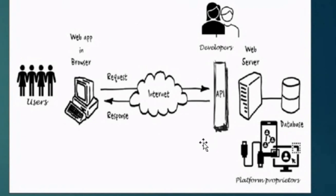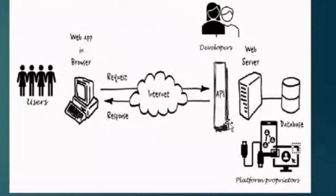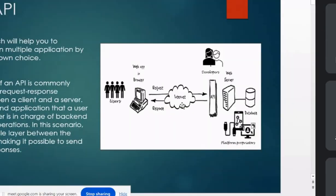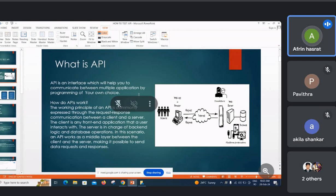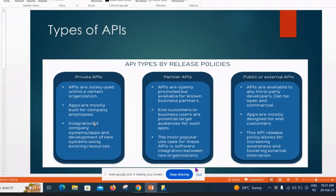How does this API work? The working principle of an API is commonly expressed through the request and response communication between the client and the server. The client is any front-end application that the user interacts with. The user interacts with the backend logic and the database operations. In this scenario, the API works as a middle layer between the client and the server, making it possible to send requests and responses.